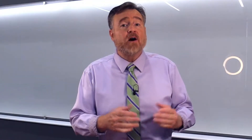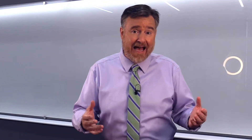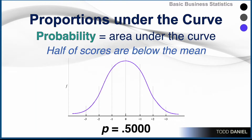You may remember the story about stirring up trouble by saying that half of public school students are below average. That reminds us that the mean is the point below which half of scores fall. When we examine a normal distribution, half of the scores will always be below the mean, and half will always be above the mean.